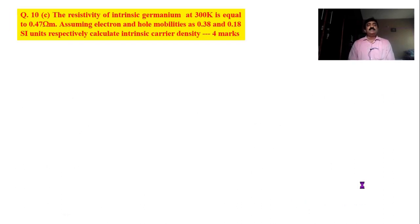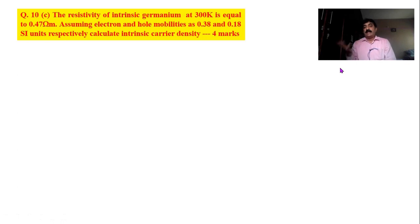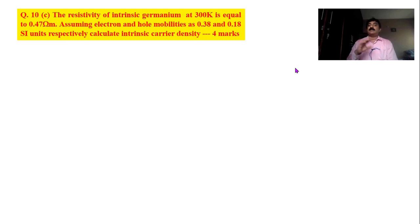Moving to the last question — a numerical problem: the resistivity of intrinsic germanium at 300 K is 0.47 ohm-meter. Resistivity is the reciprocal of conductivity. Electron mobility is 0.38 m²/V·s and hole mobility is 0.18 m²/V·s. Note that holes are less mobile than electrons, which is why n-type semiconductor is generally preferred over p-type for current conduction.